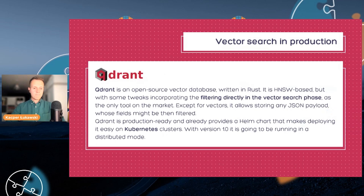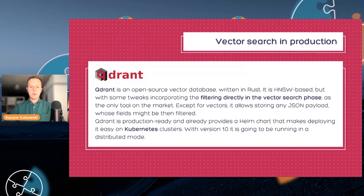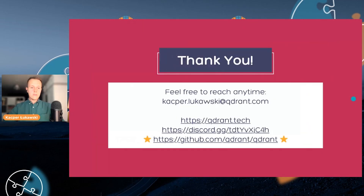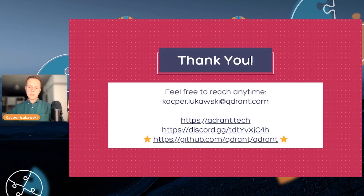Of course, I'm not trying to convince you to create your own system for that purpose. There are vector databases — that's how we call these tools — and Qdrant, the company I work for, is one of them. This is an open source vector database written in Rust that uses HNSW with extensions to perform filtering directly in the vector search space. We also have a cloud version, but this is an open source project so you can easily start doing vector search. If you have any questions regarding vector search, HNSW, or Qdrant, please feel free to reach me out via email or join our Discord channel. Thank you very much.